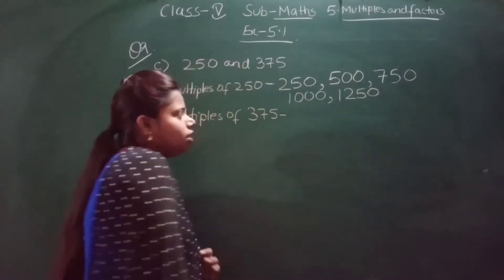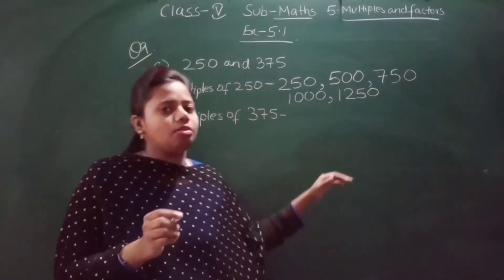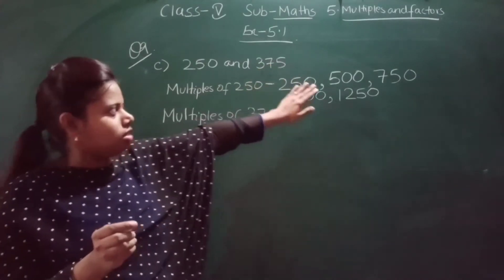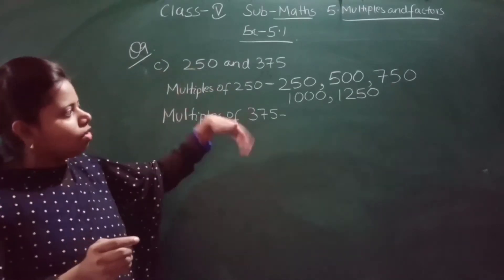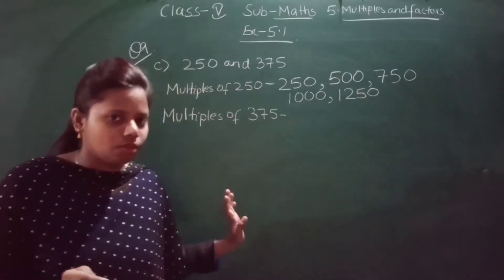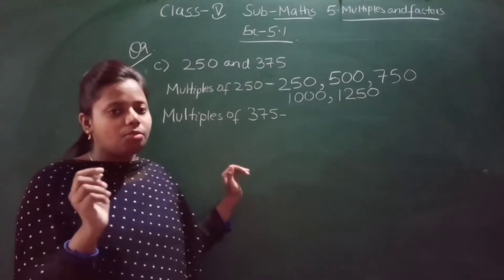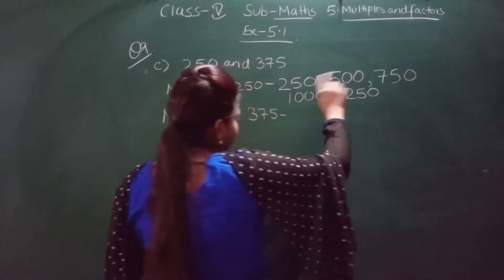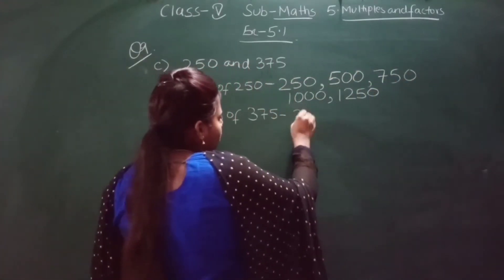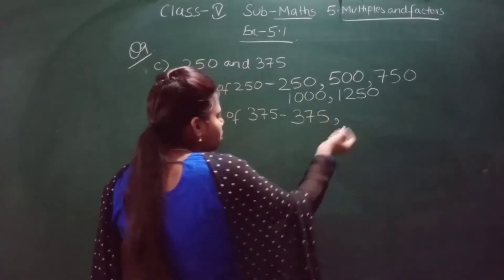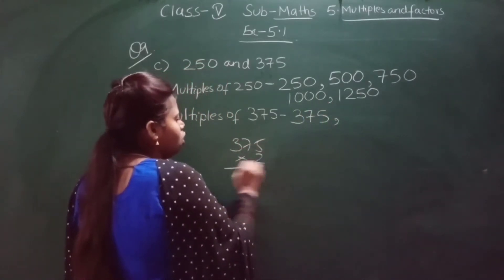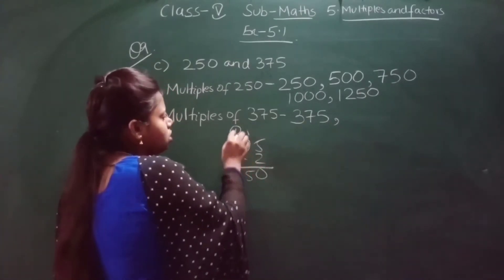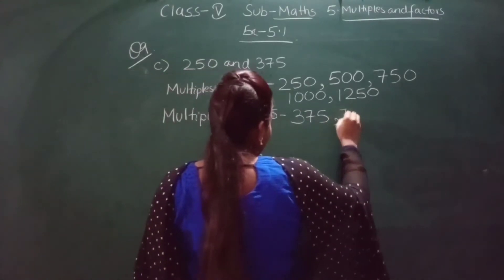So we have written the 5 multiples of 250. Now let us write the first 5 multiples of 375. The first multiple is 375 itself. The second multiple: multiply 375 by 2 — 5×2 is 10, carry 1; 7×2 is 14 plus 1 is 15, carry 1; 3×2 is 6 plus 1 is 7 — so the next one is 750.